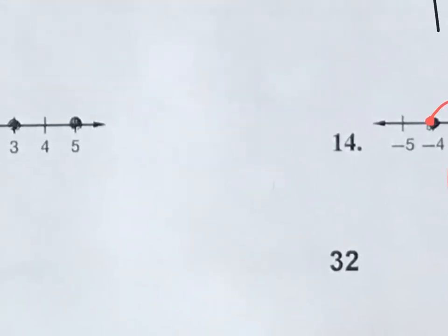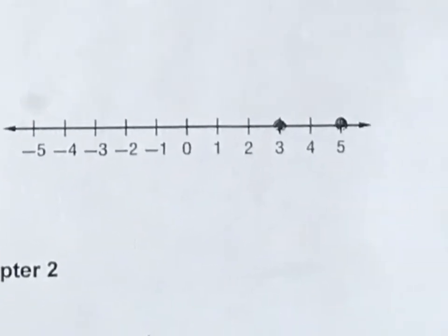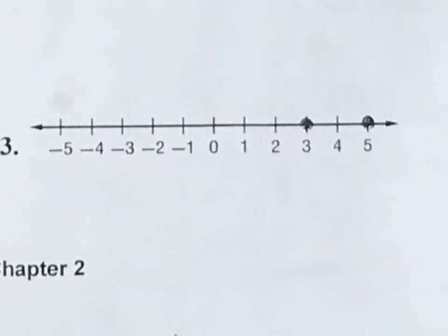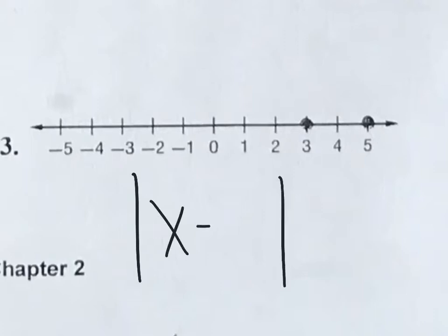Let's try number 13. The setup is the absolute value of x minus the midpoint. The midpoint is four. So the equation so far is the absolute value of x minus four, equals the distance from a point to the midpoint. The distance from this point to the midpoint is one. So the equation is the absolute value of x minus four equals one, which produces answers of three and five.